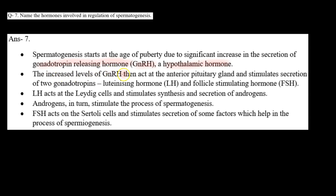The increased levels of GnRH then act at the anterior pituitary gland and stimulate secretion of two gonadotrophins — luteinizing hormone, that is LH, and follicle stimulating hormone, that is FSH. फिर जो GnRH होता है, यह anterior pituitary gland पे act करता है और LH और FSH के secretion को stimulate करता है.